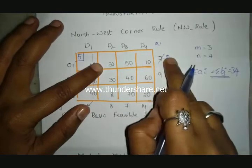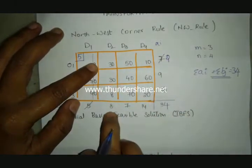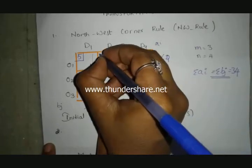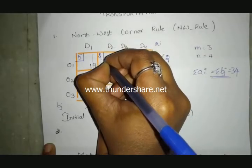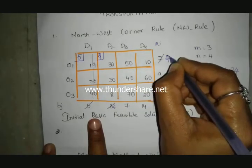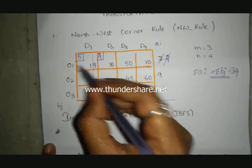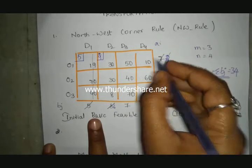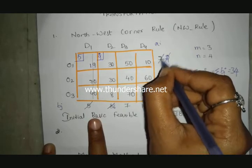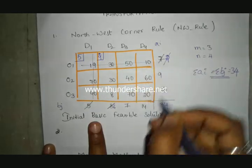Supply remaining is 2. Demand is 8. Minimum is 2, so allocate 2 here. Cancel this row. Next supply is 7. We allocated 5 to D1 and 2 to D2, so this row is complete and will be cancelled.